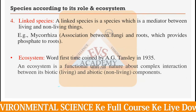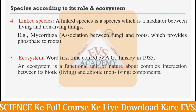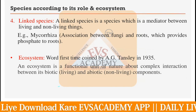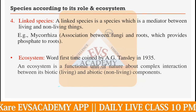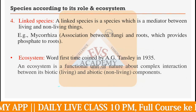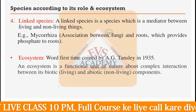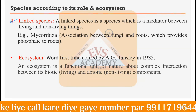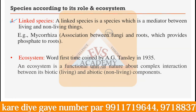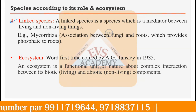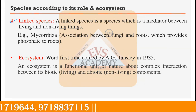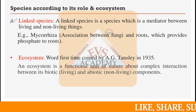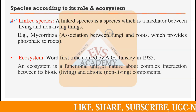The fourth type we have to discuss is linked species. Linked species is a species which is a mediator between living and non-living things. For example, a virus is a kind of linked species — it links living and non-living material. Another example is mycorrhiza, the association between fungi and roots which provides phosphate to roots. These provide some kind of mediator or link between living and non-living things, and so they are termed linked species.